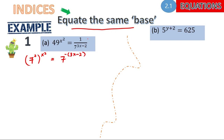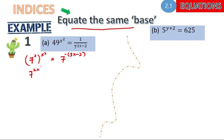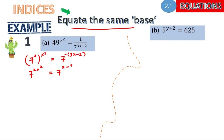Since we are taking the term to the top, we have a negative in front of the exponent. So we should have 7 to the power of 2x² — please remember your power rules for indices — and then for the other term, 2 minus 3x. Now compare the powers.